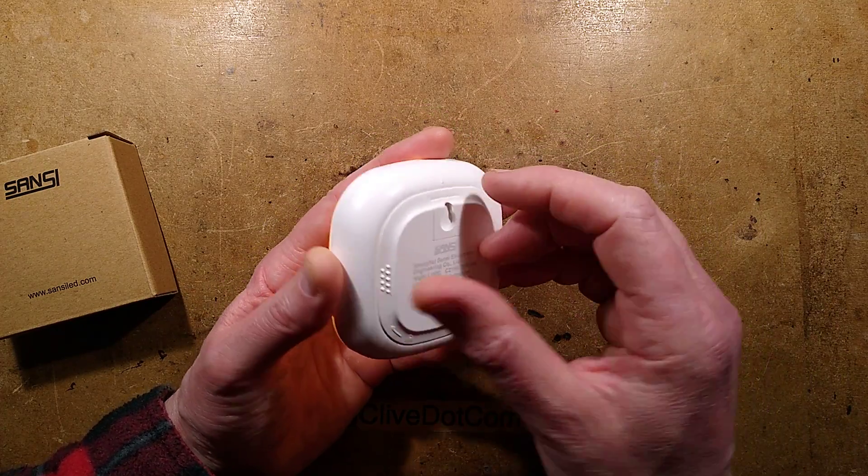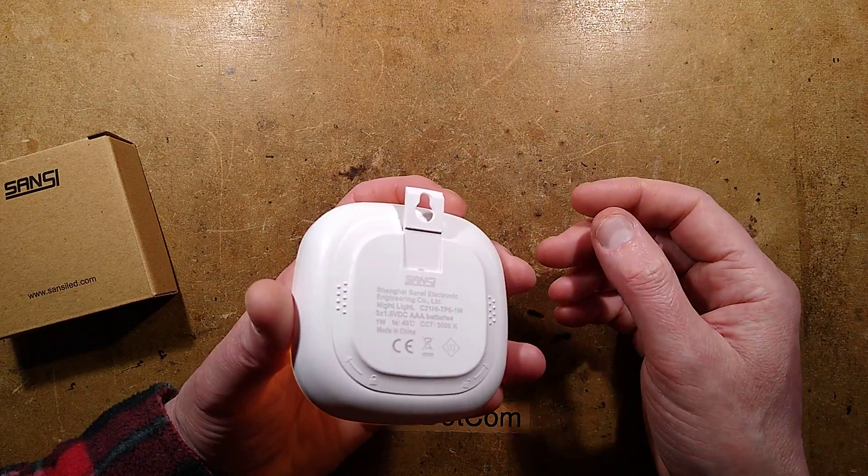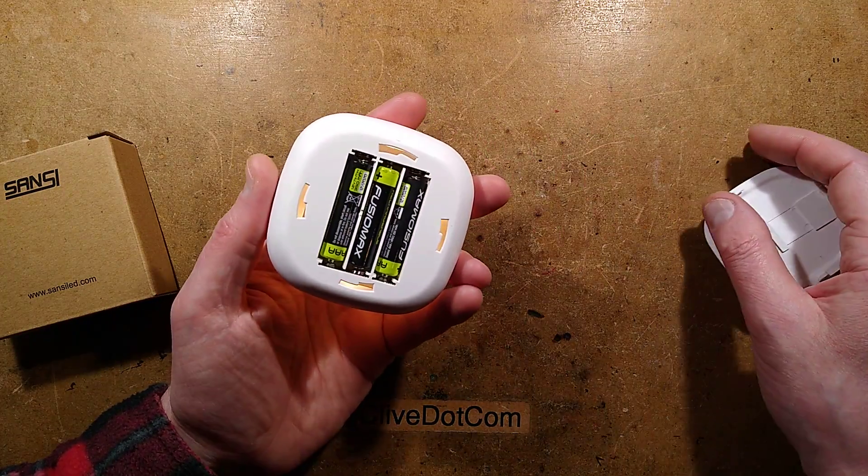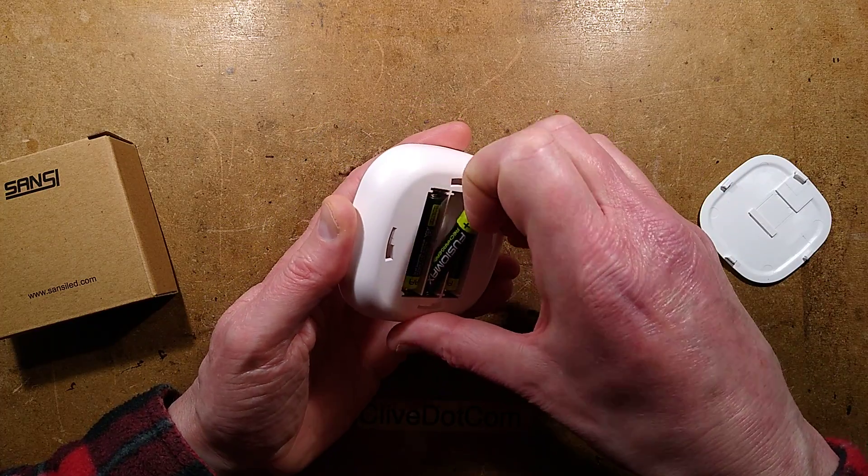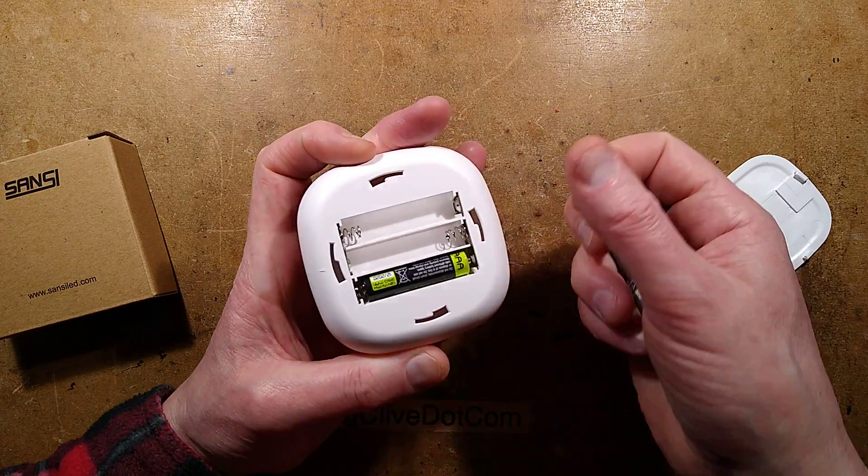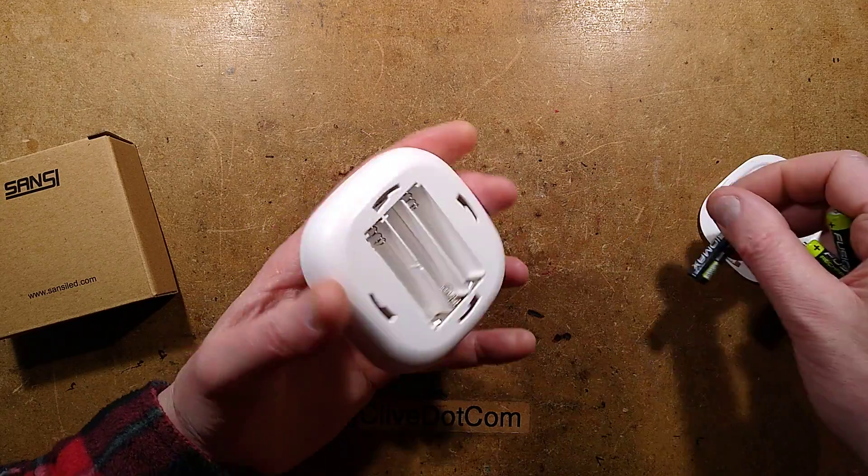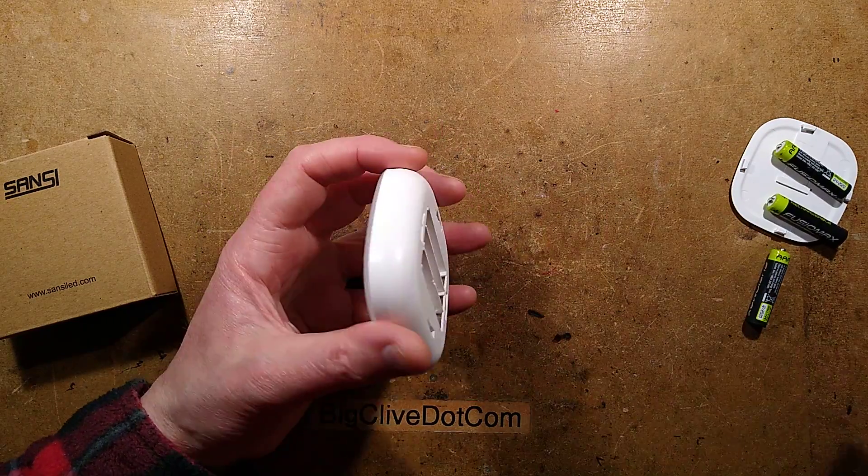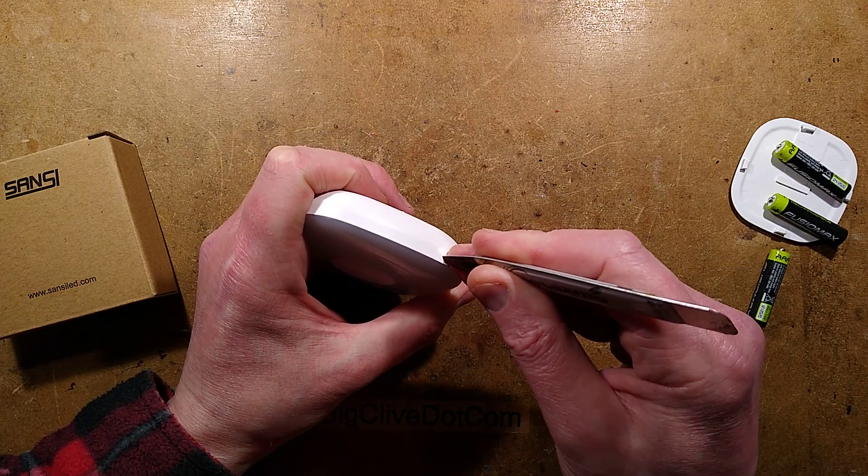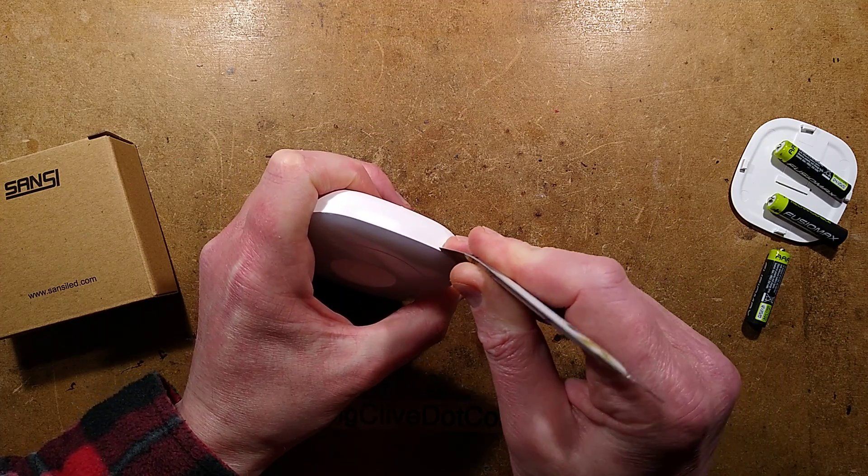The back twists off. It has a little tab that pulls out for hanging from a screw or double-sided tape if you wish, and it twists off and reveals three AAA cells. AAA cells aren't my first choice for stuff like this but it's very common. A AAA cell has about a third of the capacity of a AA cell. I'd rather use bigger cells but there must be a reason they always go for the smaller ones.